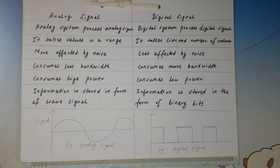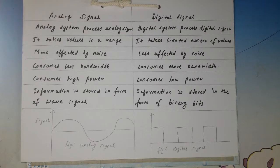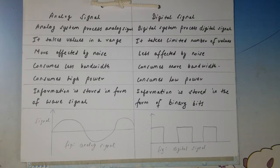Another difference is that analog signal is more affected by noise, whereas digital signal is less affected by noise. For example, in the past with analog television there used to be frequent disturbances. But nowadays with digital DTH set-top boxes, very few disturbances occur. So analog is more affected by noise and digital is less affected by noise.